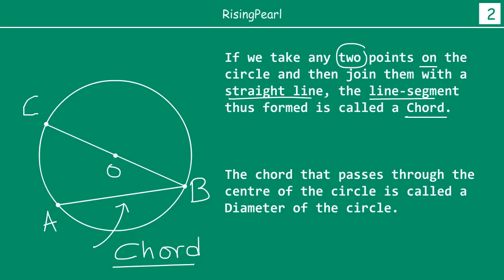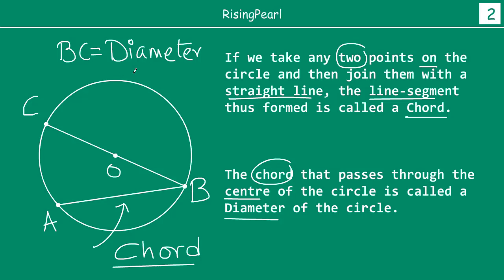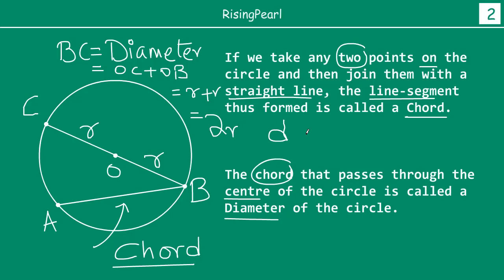The chord that passes through the center of the circle is called the diameter. So chord BC is called the diameter of the circle. Because it passes through the center, BC can be written as OC plus OB. OC is R and OB is R, which equals 2R. That means diameter, also sometimes written as lowercase d, is equal to twice the radius.